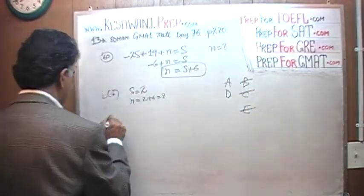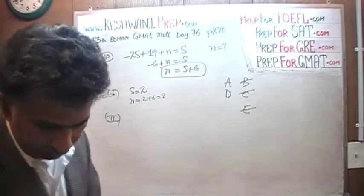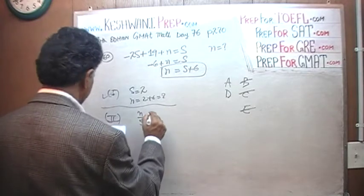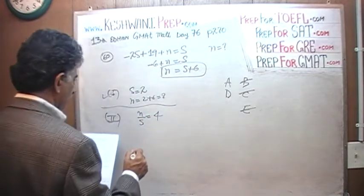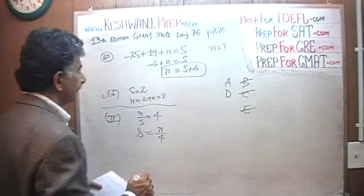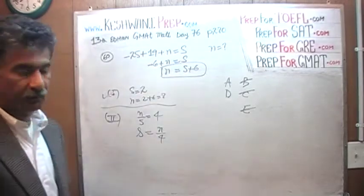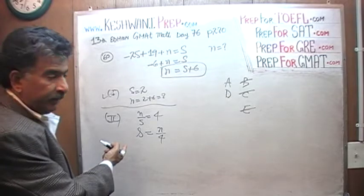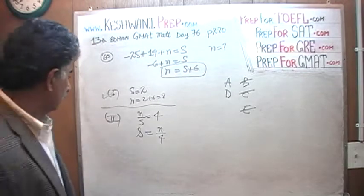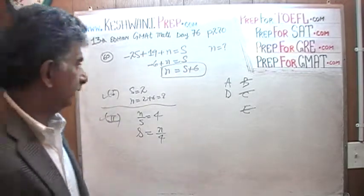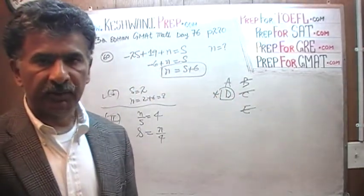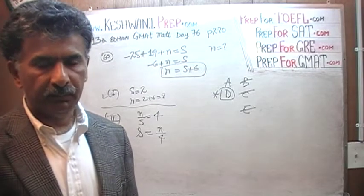Let's look at the second statement. In the second statement they tell us that n over s equals 4, which is same as s being equal to n over 4. If you put it in there, that should be enough because this is one equation here. There's one independent equation. There's another independent equation. Of course we have two independent equations. We can solve for n and s. Second statement by itself is also enough. The answer is D.